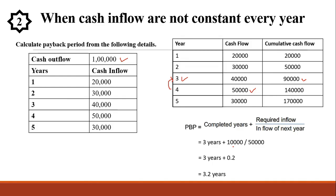Only after that the company will be able to generate profit. So in this way we have to solve a problem sum where the cash inflows are not constant every year. With this we were able to solve two problem sums — one where cash inflow was constant and one where it was not. I hope everyone understood how to calculate payback period based on these two practical examples. With this, the topic on payback period comes to an end. Thank you.